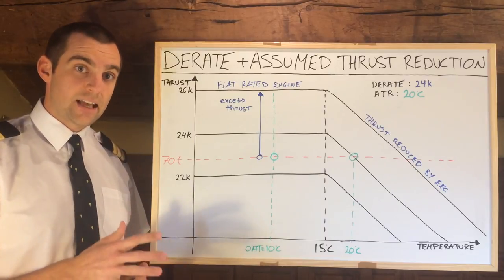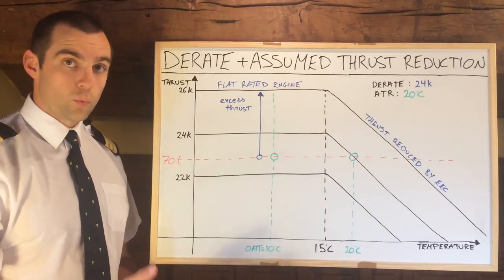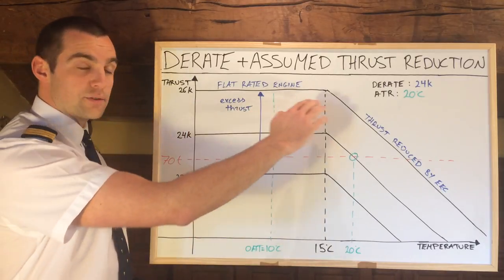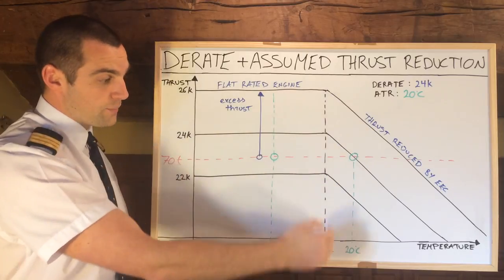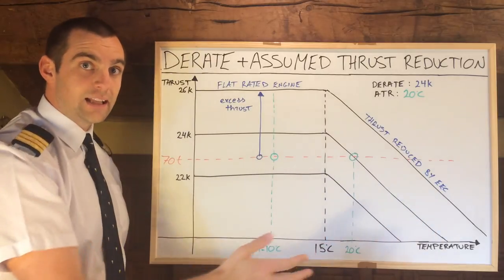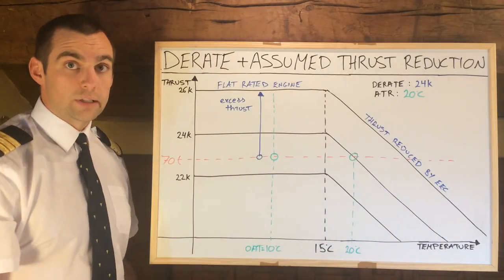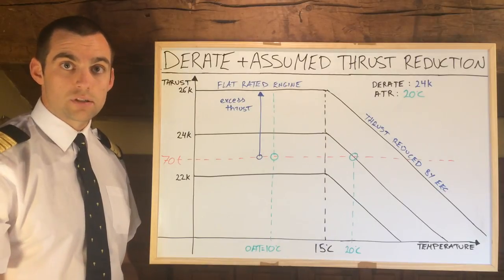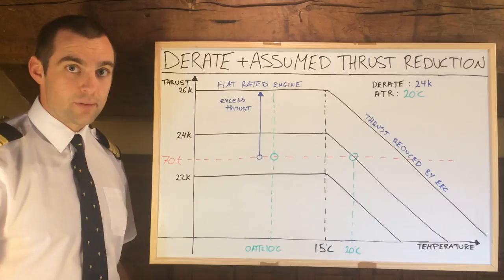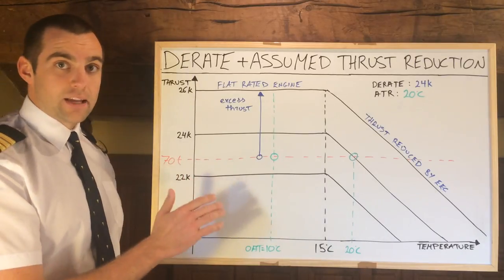First of all I'd like to say that a jet engine is what we call a flat rated engine. What this means is that they create a constant amount of thrust up to a certain outside temperature, and then the thrust is reduced electronically by an electronic engine control unit of some sort. It differs slightly from Airbus to Boeing. So that is a flat rated engine.